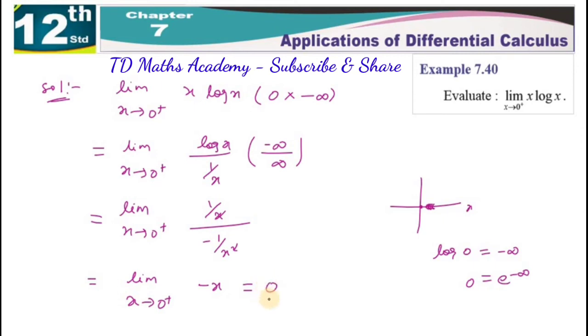So this sum answer is 0 and final answer. The method is very important. Limit is in the 9th chapter.